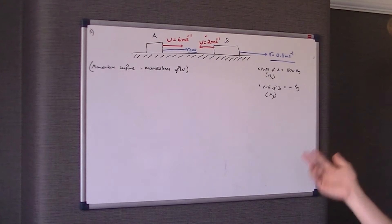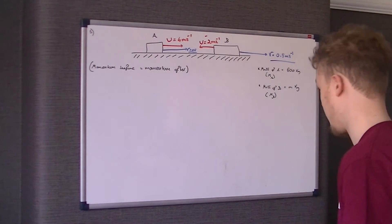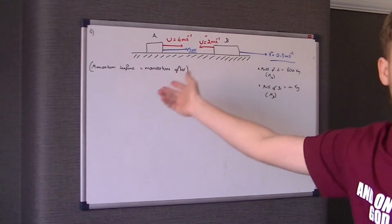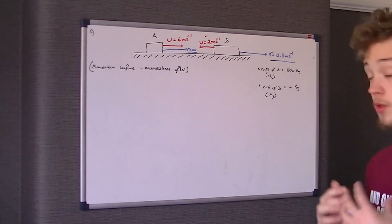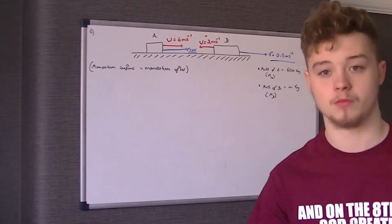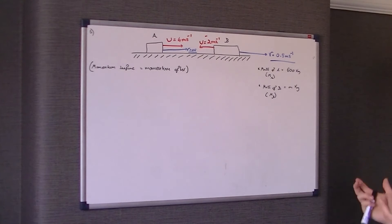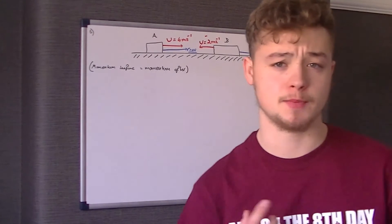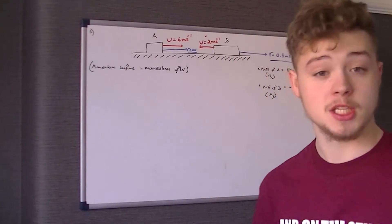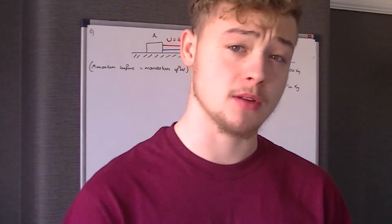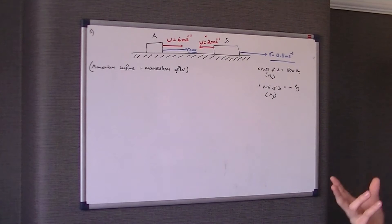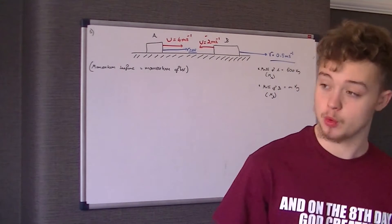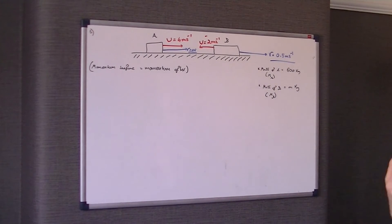We've got two trucks, trains, or whatever — blocks, particles — they are both travelling in opposite directions, in other words towards each other. A has a speed of 4 metres per second whereas B has a speed of 2 metres per second. The mass of A is 600 kilograms and the mass of B is what we're asked to find out in part A.